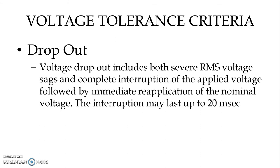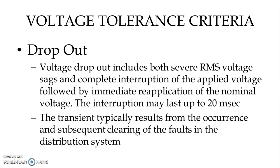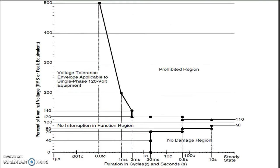The next event is dropout. Voltage dropout includes both severe RMS voltage sags and complete interruption of the applied voltage, followed by immediate reapplication of the nominal voltage. The interruption may last up to 20 milliseconds. This transient typically results from the occurrence and subsequent clearing of a fault in the distribution system, resulting in a total loss of voltage or severe voltage sag.